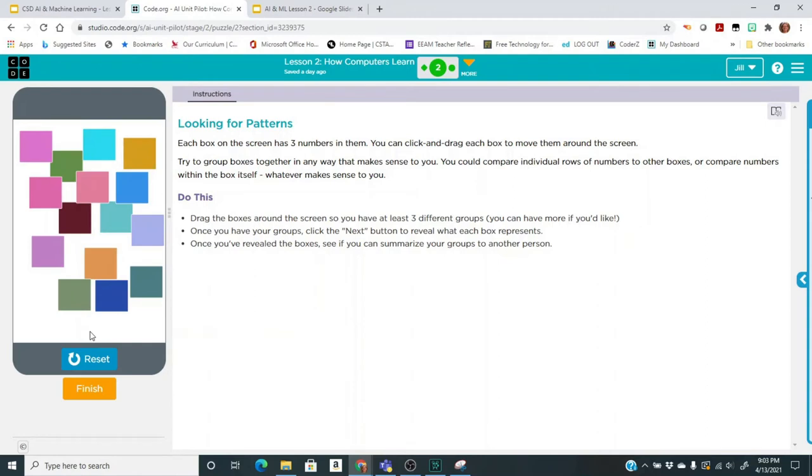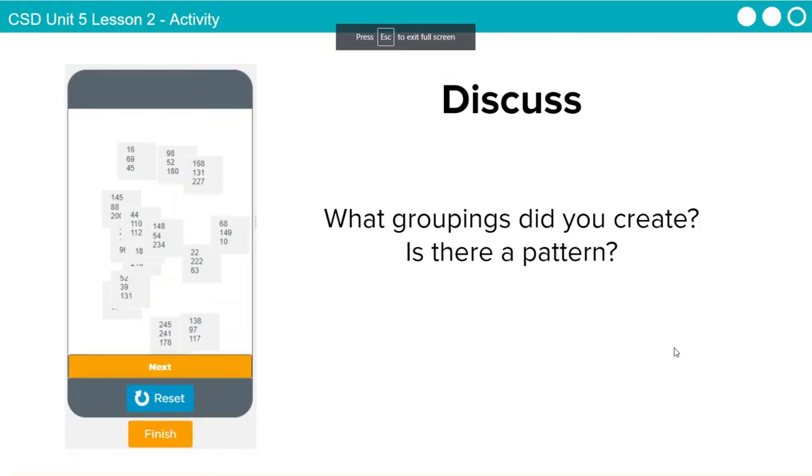When you click Next, you notice that the boxes turned into colors. So what do you think those numbers actually represented? It seems to me that they were like the red, green, blue numbers that we've kind of talked about before, and I didn't realize that. So this was all a really interesting activity for me and I hope that you found it kind of interesting too.